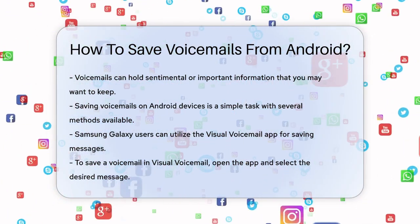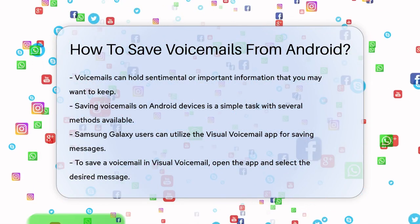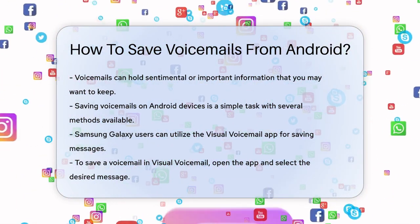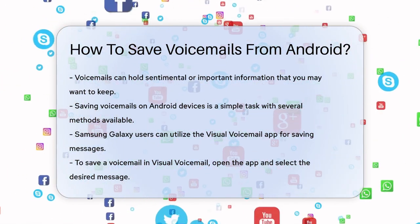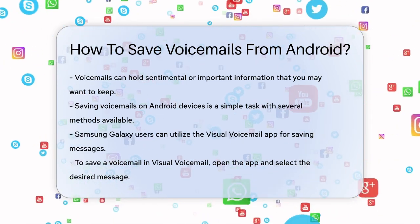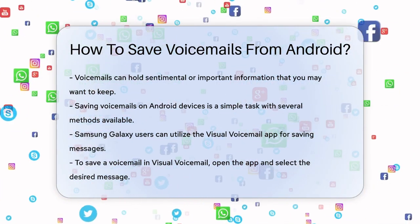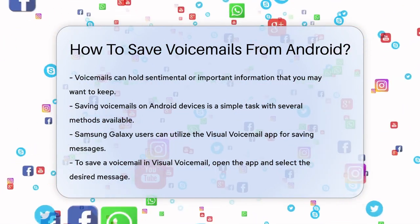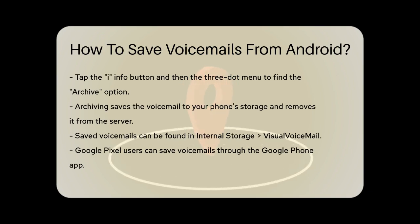If you have a Samsung Galaxy phone, you can use the Visual Voicemail app. First, open the app and select the voicemail you want to save. You might need to let it load and tap it again to expand the voicemail. Once it's expanded, tap the Info button and then the three-dot menu icon in the top right corner. Select Archive from the menu.